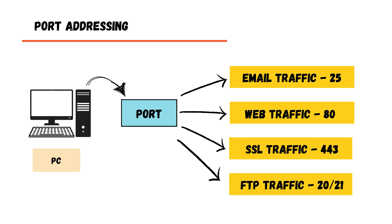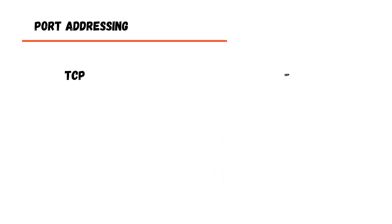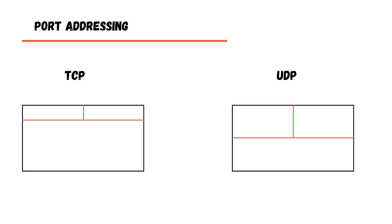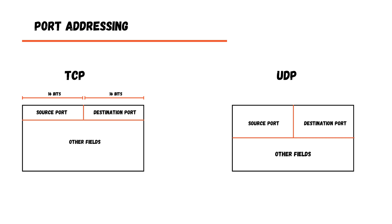Port addressing is a concept that exists only at the transport layer. Both TCP and UDP, which work at the transport layer, indicate which data packet is associated with which port. In the TCP header, the source port and destination port fields are each 16 bits. Similarly, in the UDP header, both source port and destination port are 16 bits. In simple terms, when a machine receives a huge stream of data, port addressing differentiates which data goes to which application process.